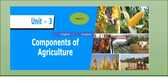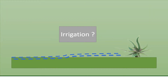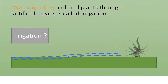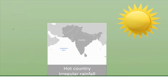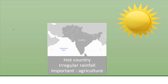Let's start. First, what is irrigation? Irrigation means the watering of agricultural plants through artificial means — that is called irrigation. Irrigation is very necessary and important for our country because, first, it is a hot country, and second, there is irregular rainfall. Rain does not fall regularly, so irrigation is very important for agriculture.